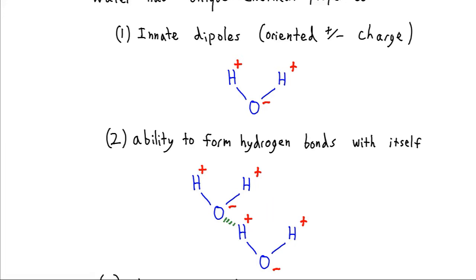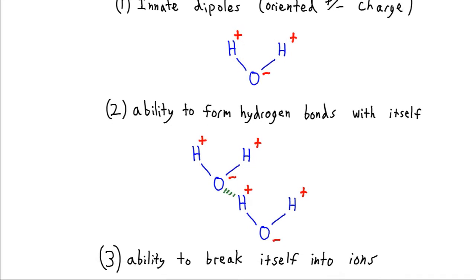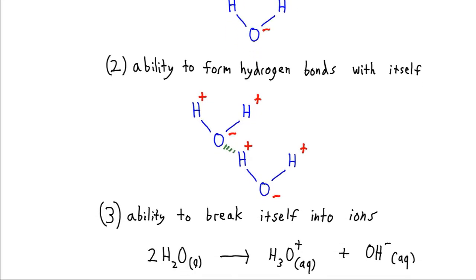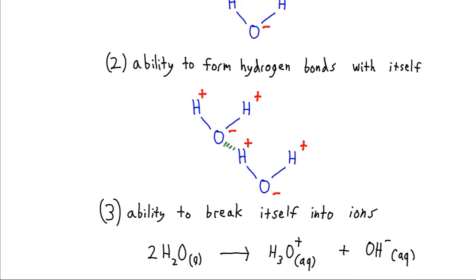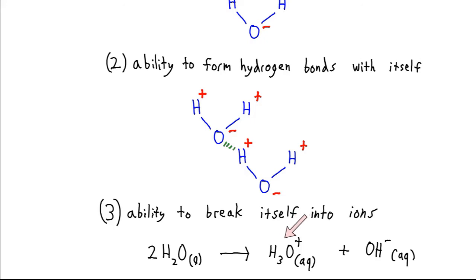Water can also break itself apart into ions. So even if we don't have any ions that we've added to our water — just a pure sample — water is going to create ions all by itself. We have two water molecules, and one of them can donate a hydrogen to the other one. We get what's called hydronium, H₃O⁺. And the water molecule that gave away its hydrogen is now OH⁻, which is called hydroxide.